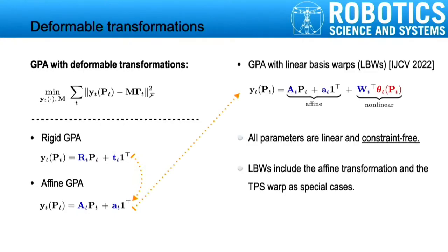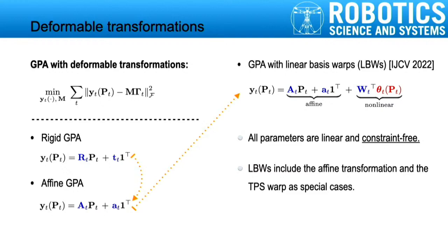An even more general form is the Linear Basis Warp, or LBW. In general, an LBW contains an affine part and a nonlinear part, and all the parameters are linear and constraint-free. The nonlinear part of the LBW admits a dual formulation. Thus, we can obtain a kernel-based transformation model. The kernel-based model is more flexible than LBWs and avoids the complication of choosing nonlinear basis functions.